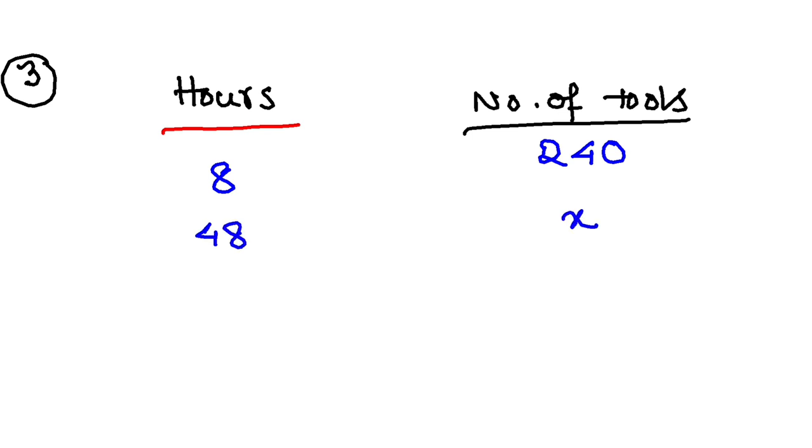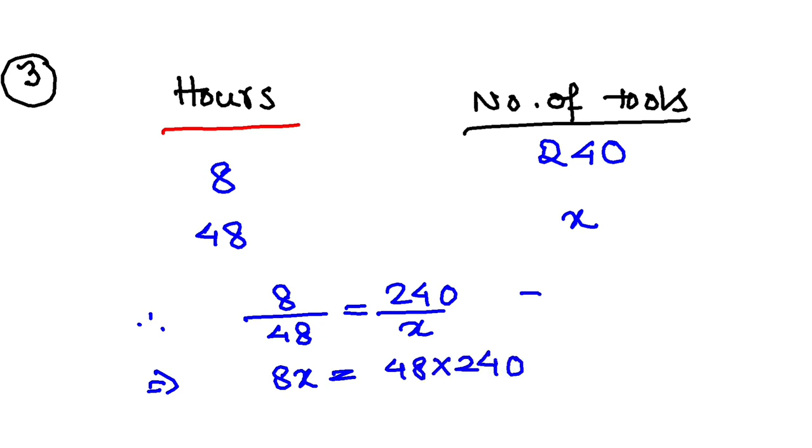Hours and number of tools are in direct variation, so 8 by 48 equals 240 by x. I have 8x equals 48 times 240. So x equals 48 times 240 divided by 8, which is...